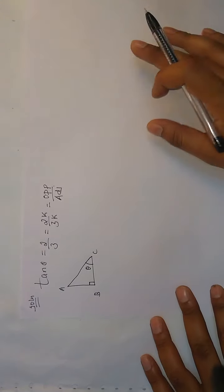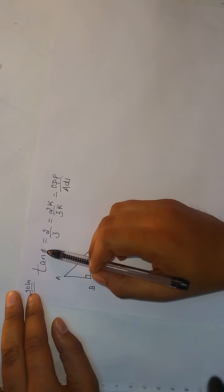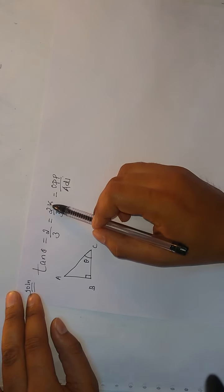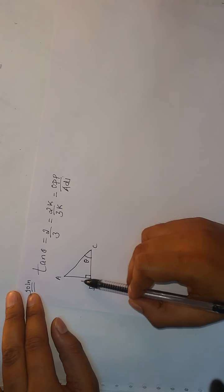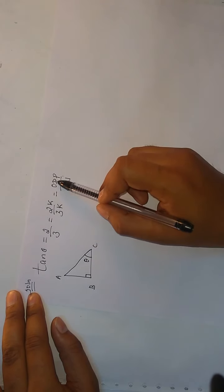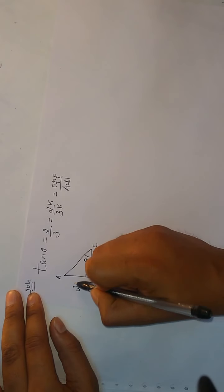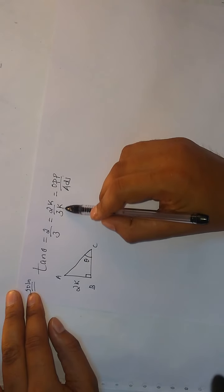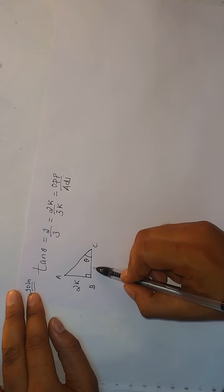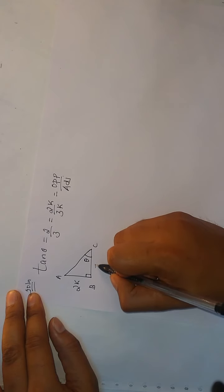So tan θ is AB by BC. θ is at C, so the opposite side AB is equal to 2k. The adjacent side BC is equal to 3k.